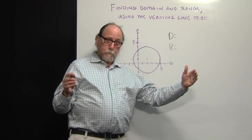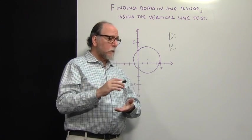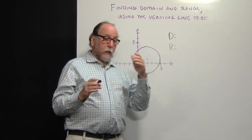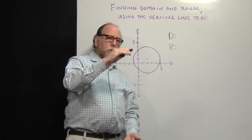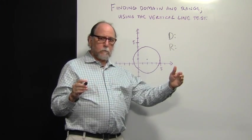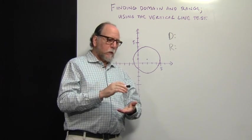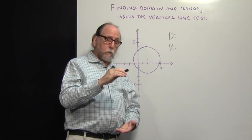Domain goes this way, left to right, and it's the highest and the lowest value. And range goes this way. Domain is the x values, or input values, and range is the y values, or output values.